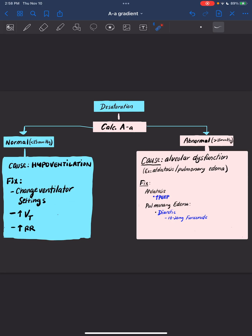So our patient is desaturating and we calculate the A-a gradient and it's abnormal, meaning it's greater than 15 millimeters of mercury. Our cause of the desaturation is most likely alveolar dysfunction. Examples of things that increase the alveolar concentration gradient are atelectasis, pulmonary edema, vasodilators, and aging.